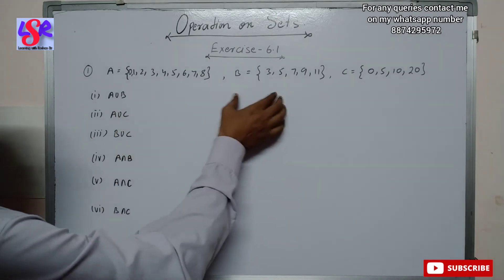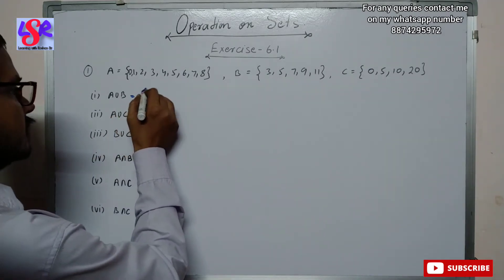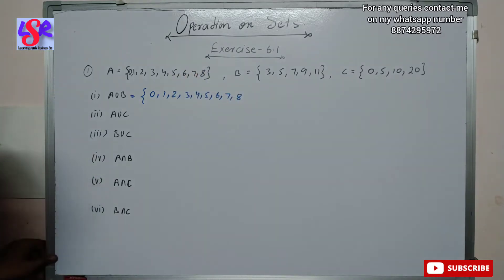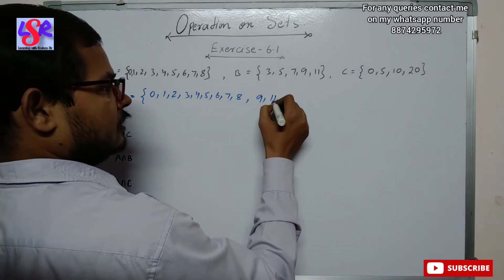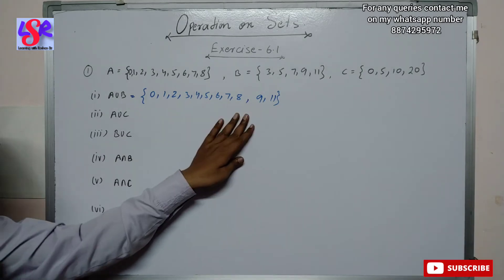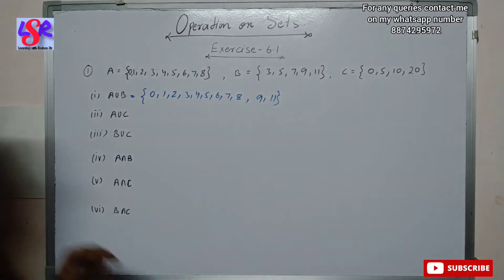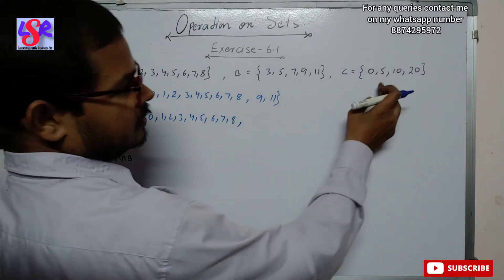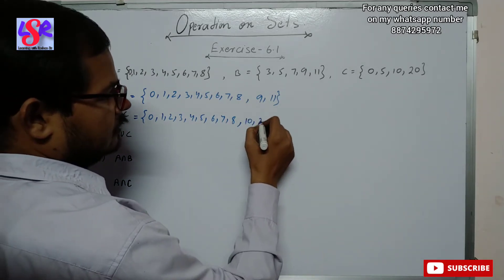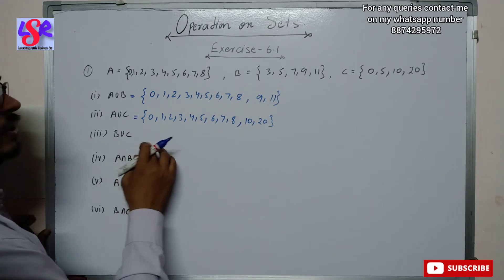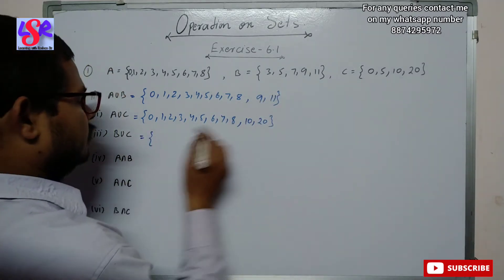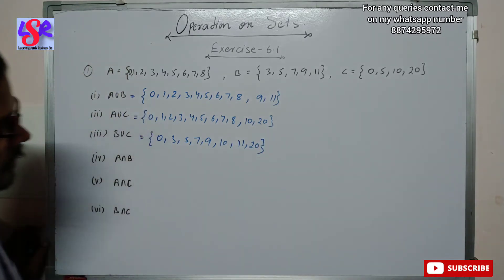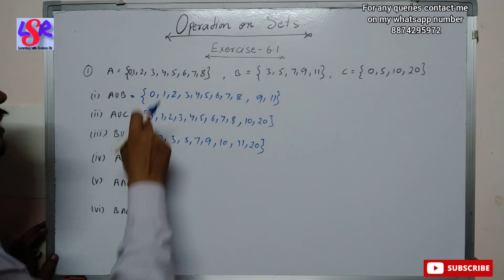For A union B, we write all elements of A and B without repeating. A union C: we write elements from A — 0, 1, 2, 3, 4, 5, 6, 7, 8 — then from C we add 10 and 20. For B union C, the combination is: 0, 3, 5, 7, 9, 10, 11, and 20.